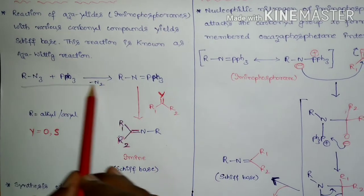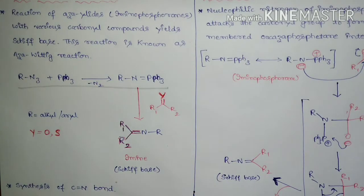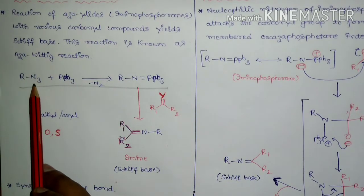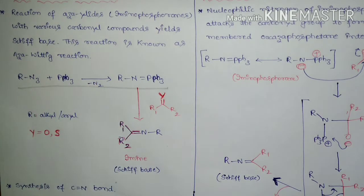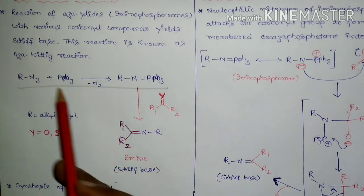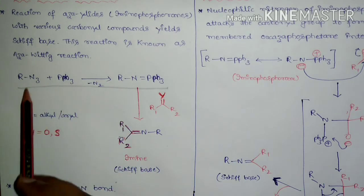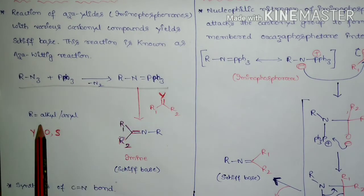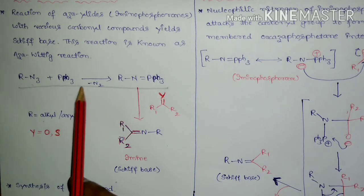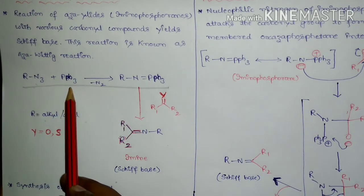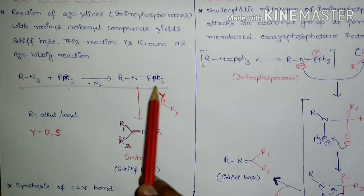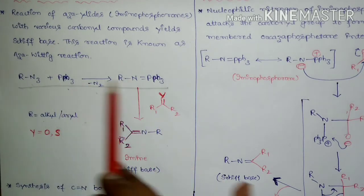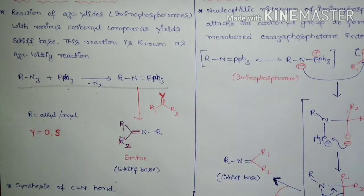Up to the formation of iminophosphorane, it is the Staudinger reaction — that is, the organic azide reacts with trialkyl or triaryl phosphine. In the Aza-Wittig reaction, we use triphenylphosphine specifically. The organic azide, which may be alkyl or aryl, reacts with triphenylphosphine with loss of a nitrogen molecule to form the iminophosphorane. Up to this point, it is the Staudinger reaction.